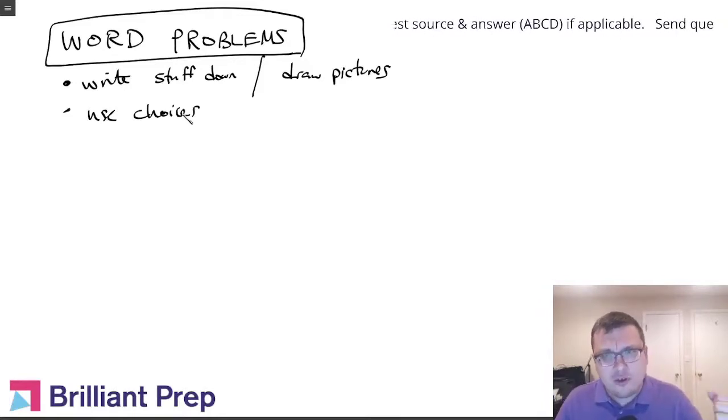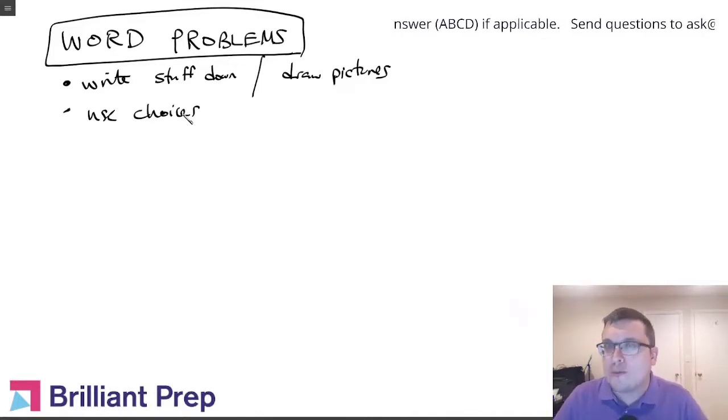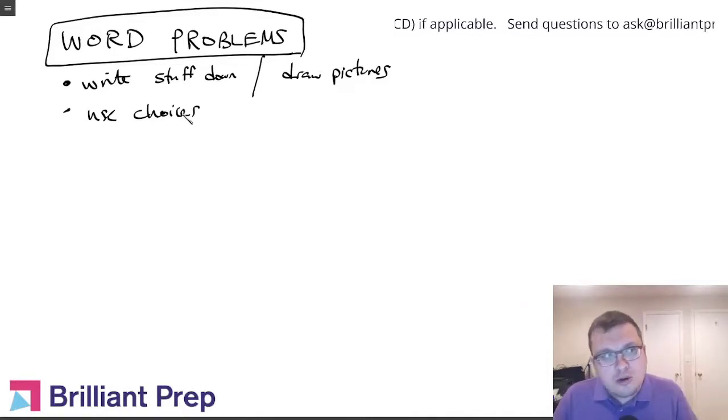So the way I kind of describe this is you come at the question from two ends. On the one hand, you're reading the problem, writing it down, trying to generate an answer the normal way. But you also have an eye on the choices and you use process of elimination to help you narrow down and find the best answer that works for you and give you some ideas about how to get the answer.